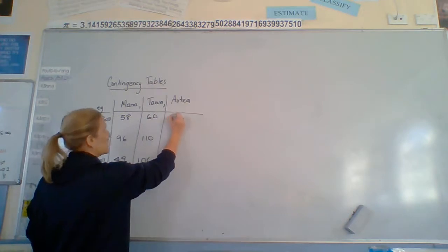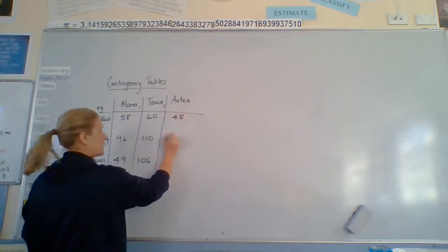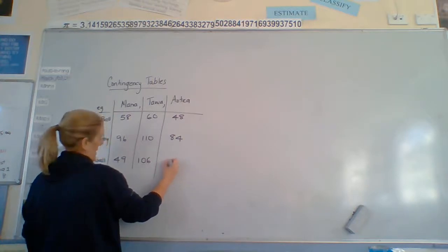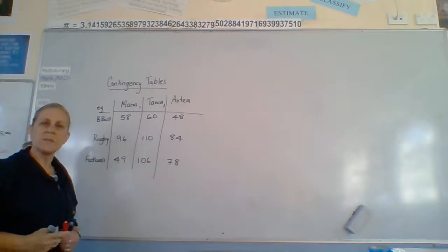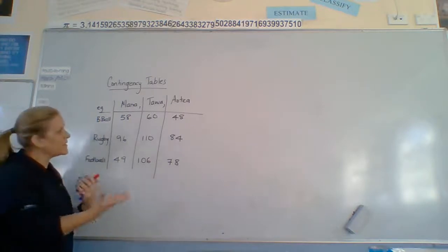No bias here towards any sport of course. Aotea, basketball 48, rugby 84, football 78. Pretty horrible sort of numbers, but that's who's enrolled and they're going to make teams out of them.